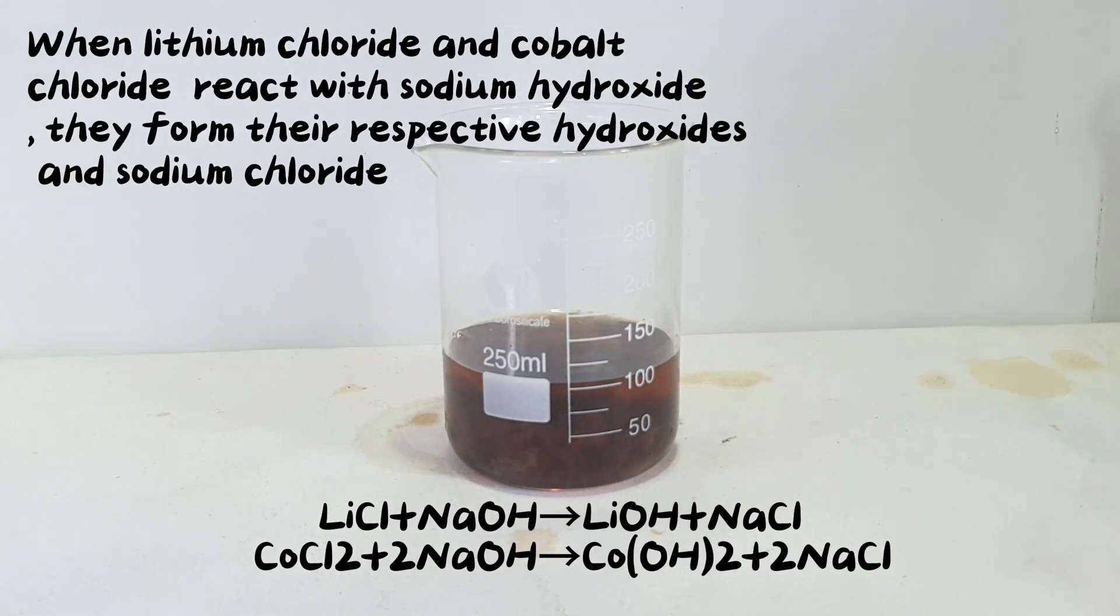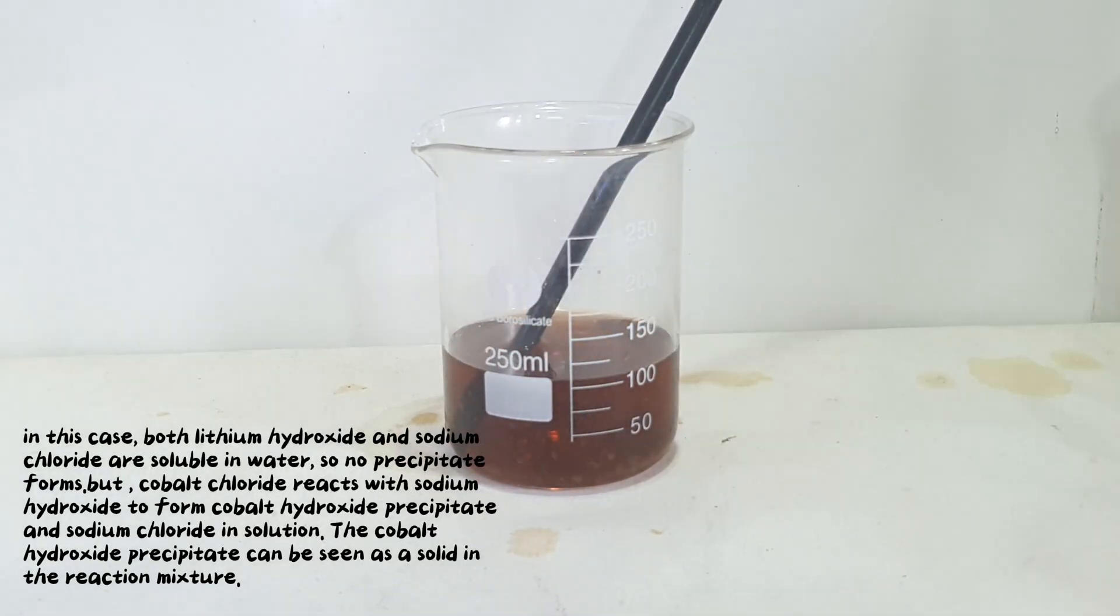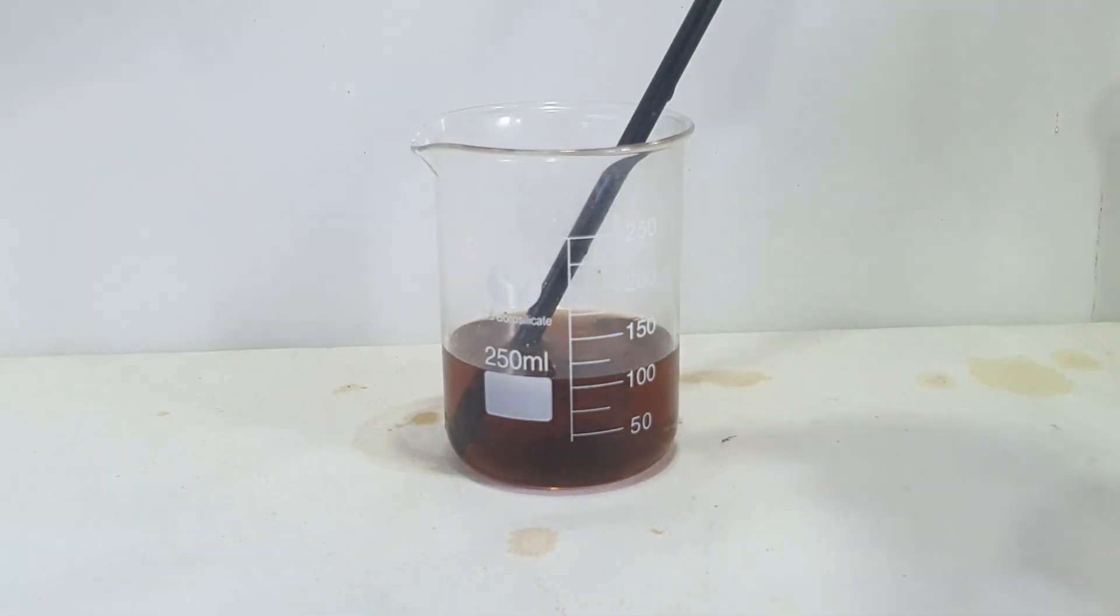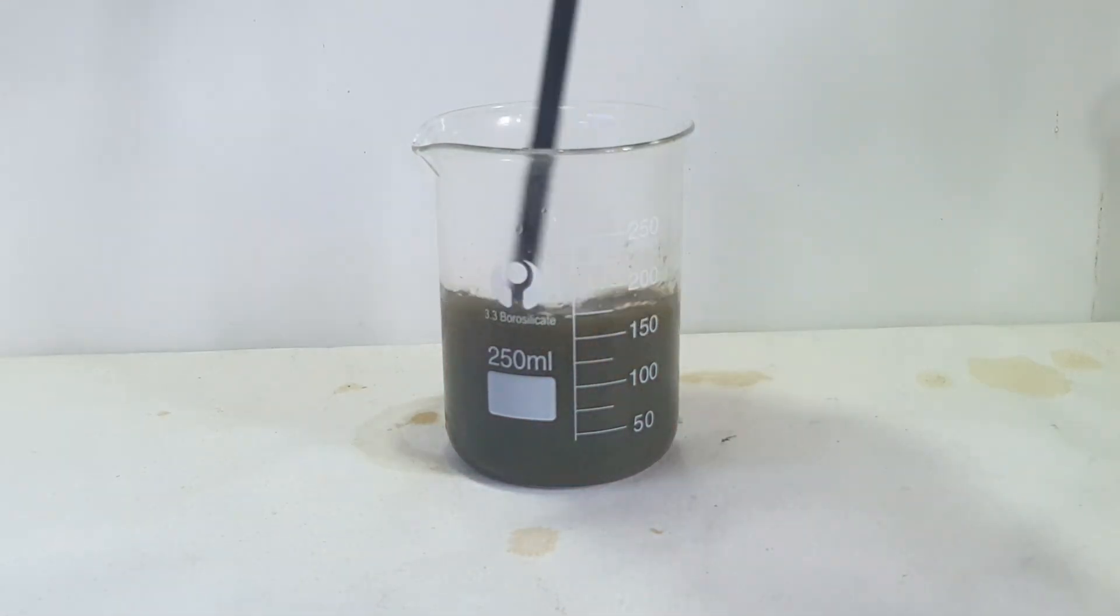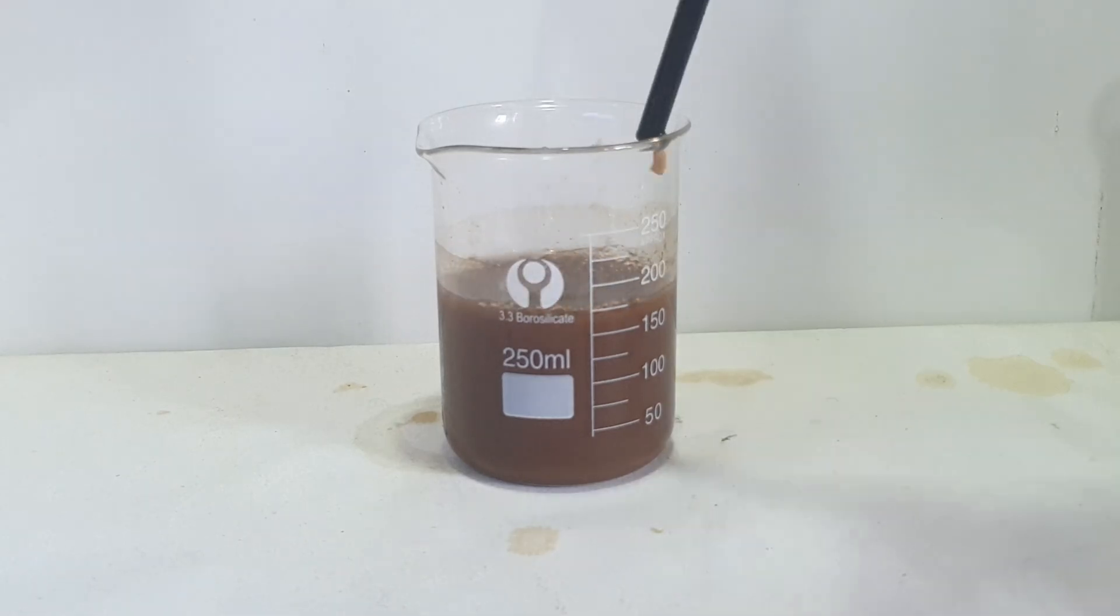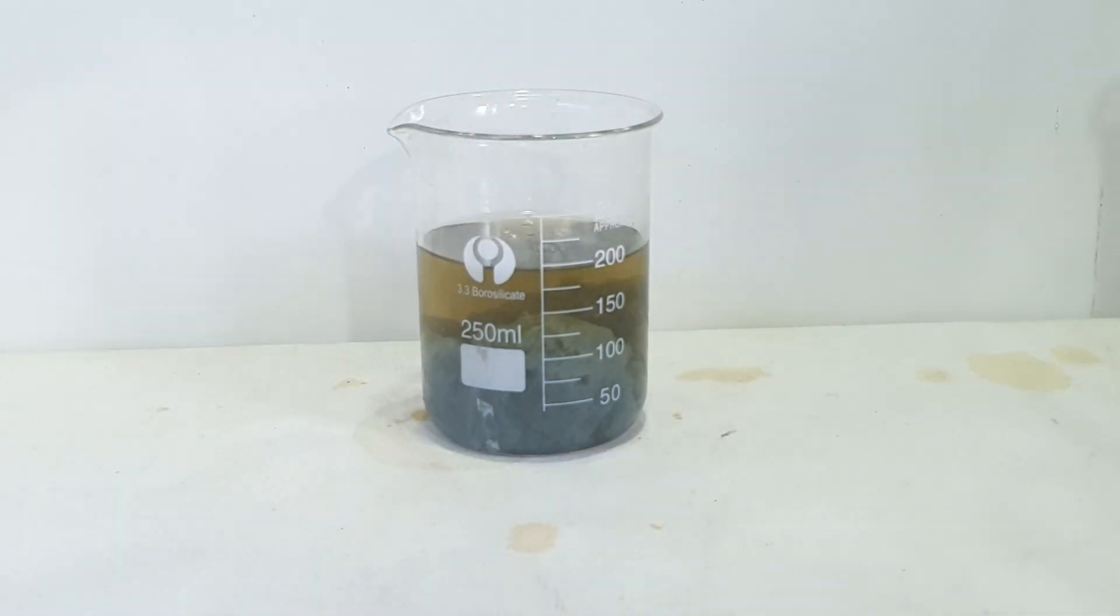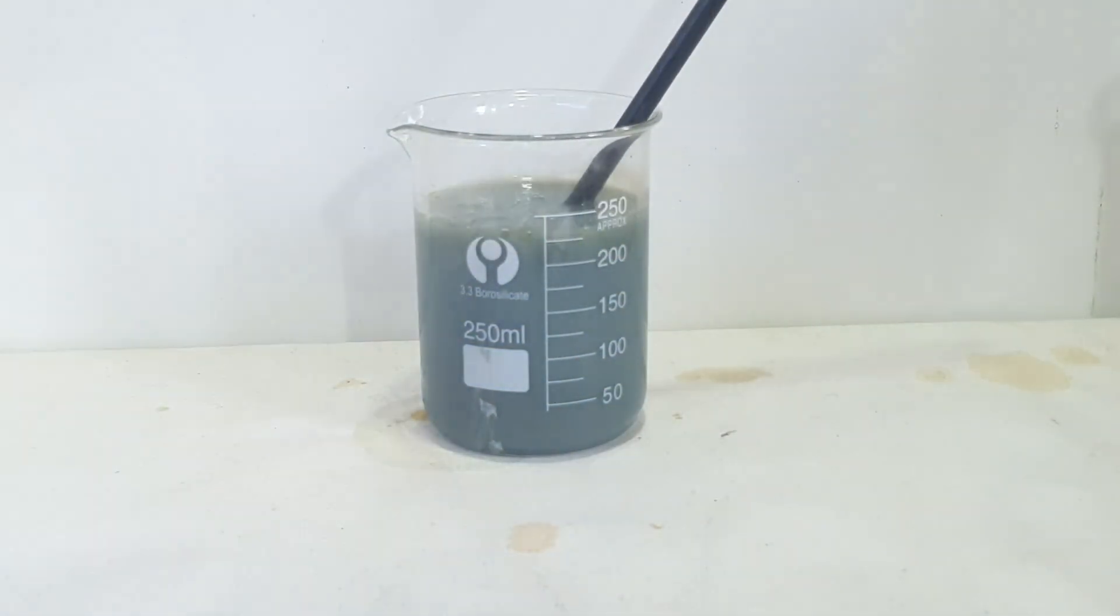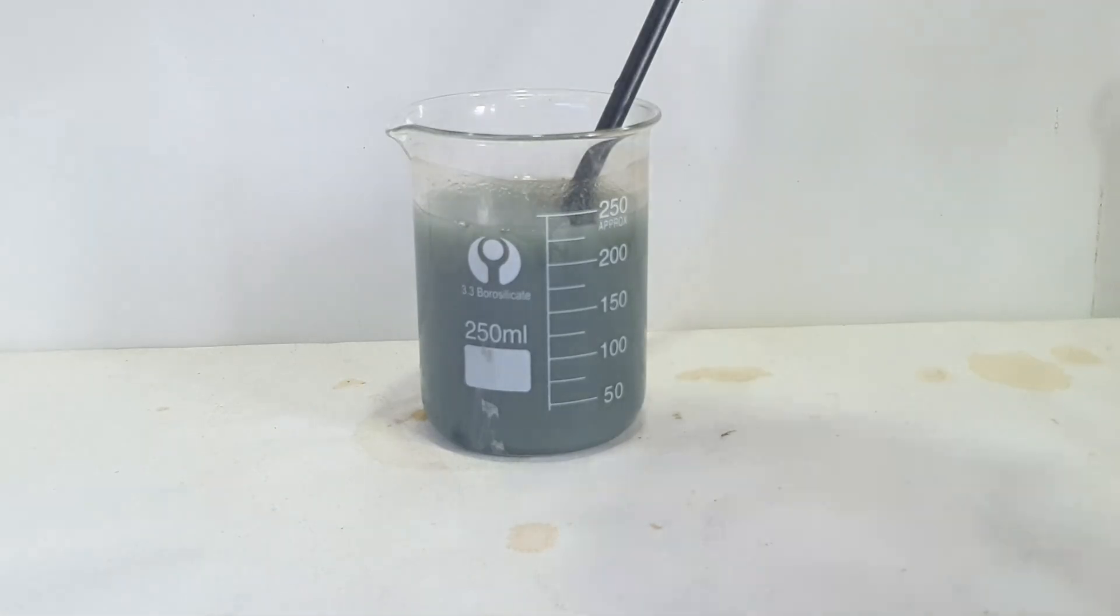When lithium chloride and cobalt chloride react with sodium hydroxide, they form their respective hydroxides and sodium chloride. In this case, both lithium hydroxide and sodium chloride are soluble in water, so no precipitate forms. But, cobalt chloride reacts with sodium hydroxide to form cobalt hydroxide precipitate and sodium chloride in solution. The cobalt hydroxide precipitate can be seen as a solid in the reaction mixture.